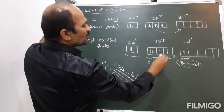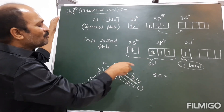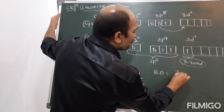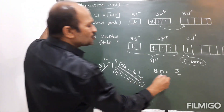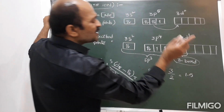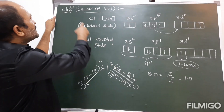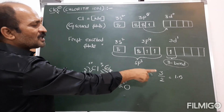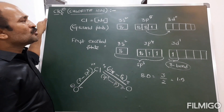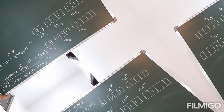For the bond order of ClO₂⁻: number of bonds formed by the central atom is 3, divided by the number of surrounded atoms which is 2, giving bond order = 1.5. So in ClO⁻ bond order is 1, and in ClO₂⁻ bond order is 1.5. Now let's move forward to ClO₃⁻ and ClO₄⁻.